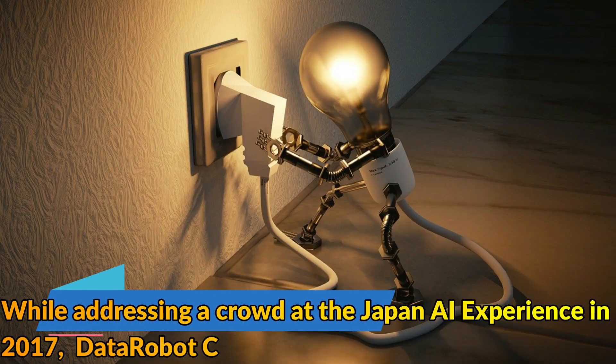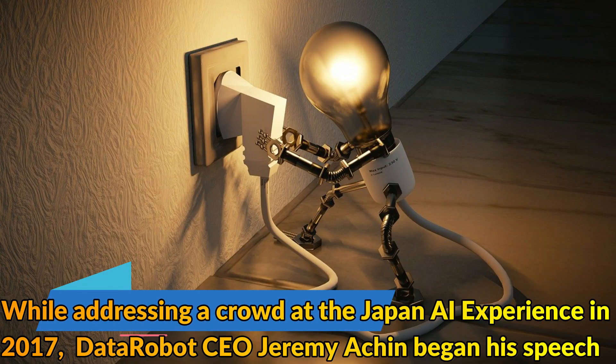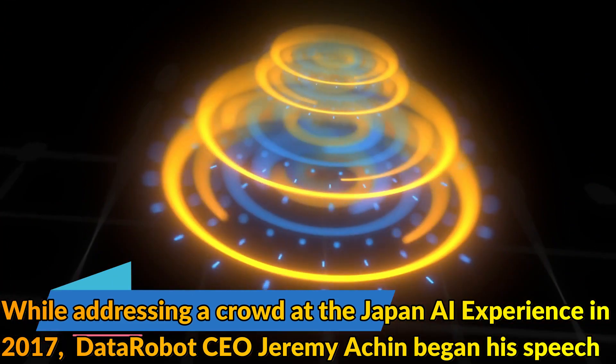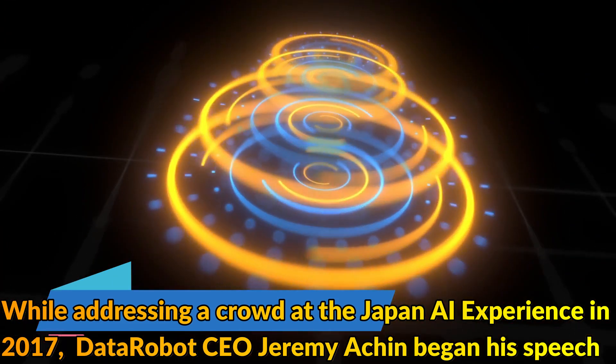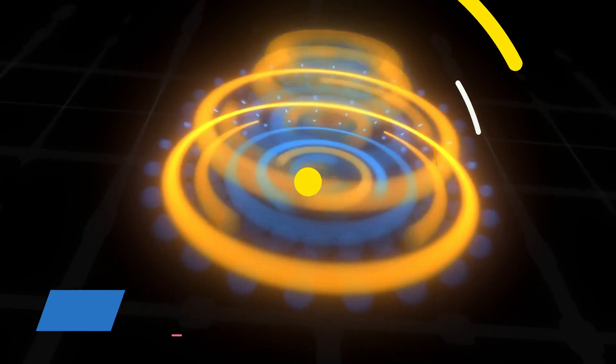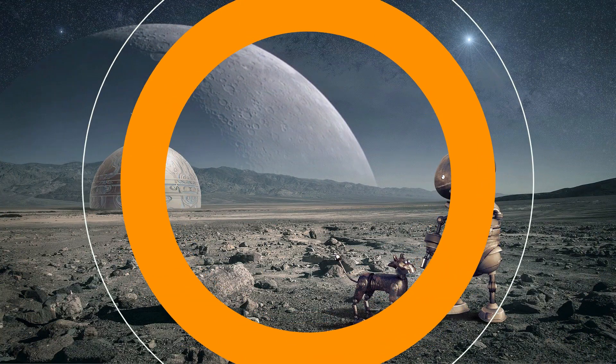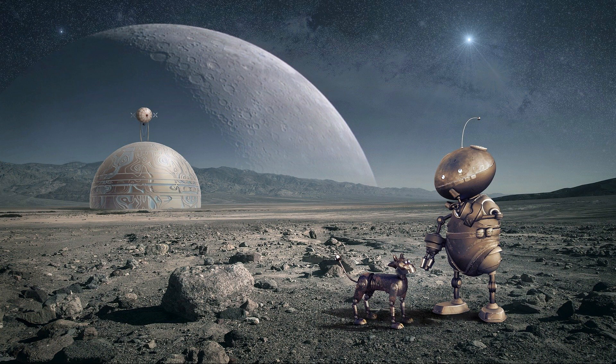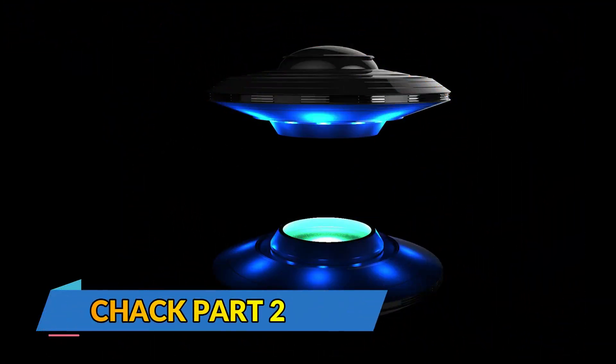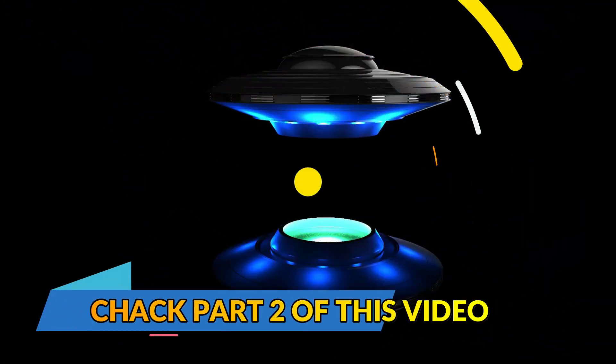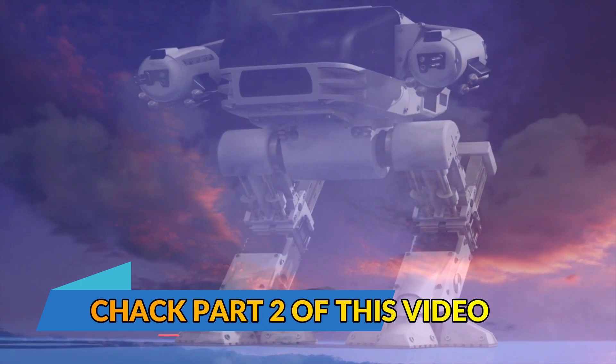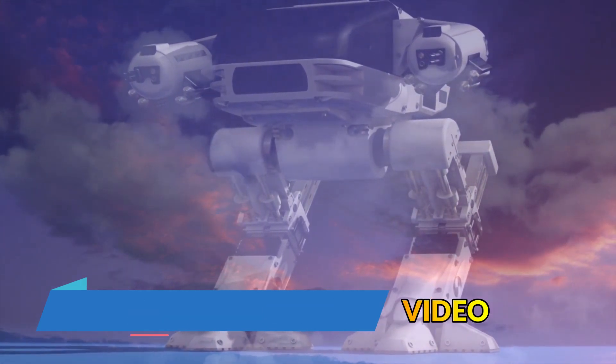While addressing a crowd at the Japan AI Experience in 2017, DataRobot CEO Jeremy Atchin began his speech by offering the following definition of how AI is used today: AI is a computer system able to perform tasks that ordinarily require human intelligence. Many of these artificial intelligence systems are powered by machine learning, some of them are powered by deep learning and some of them are powered by very boring things like rules.